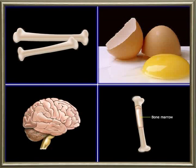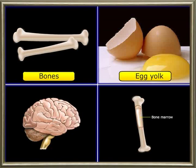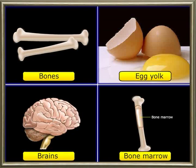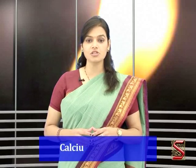What is the common element present between bones, egg yolk, brains and bone marrow? In all these substances, phosphorus is present as calcium phosphate.